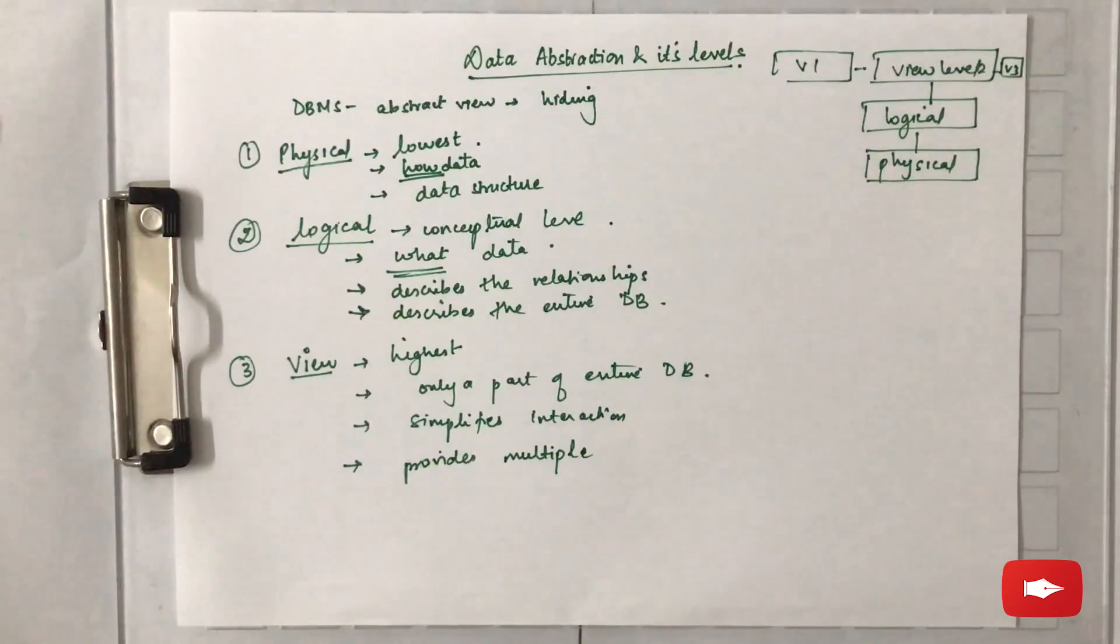So this was data abstraction and its levels in the DBMS. Thank you.